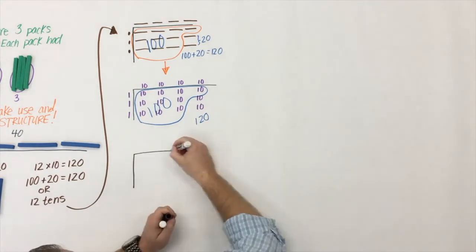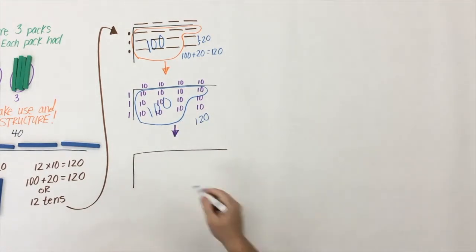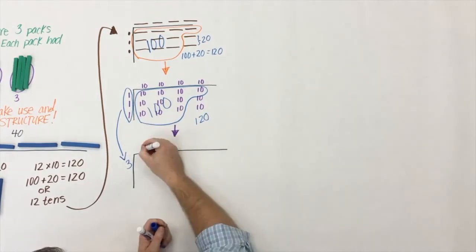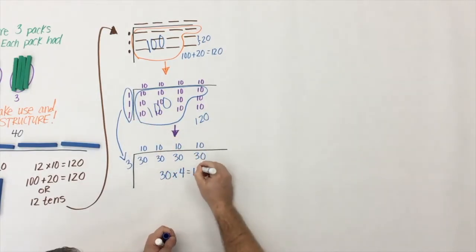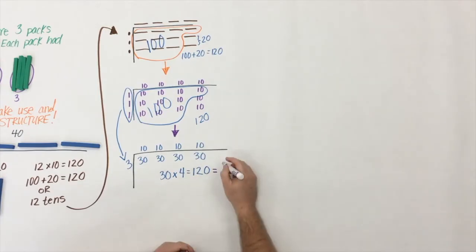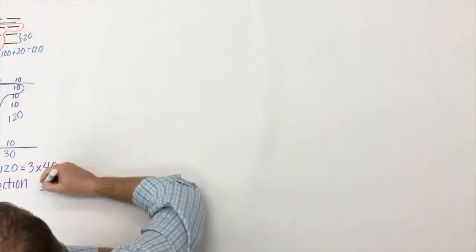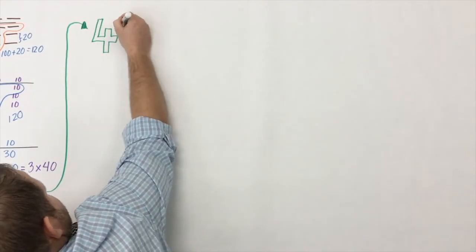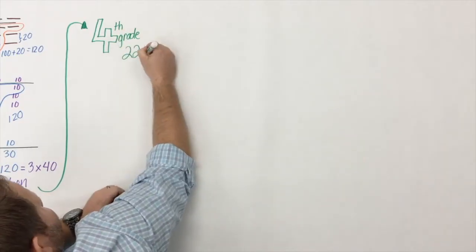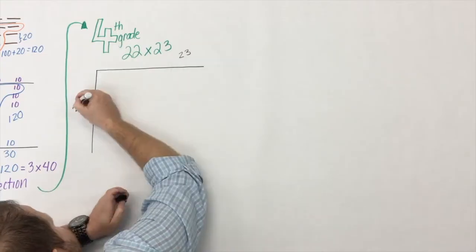Connections are being made all the time. Then eventually, after multiplying all of these ones and tens, students begin to collect and group numbers together. Now we're beginning to become efficient thinkers, and the connections are being made all around because students are exploring.